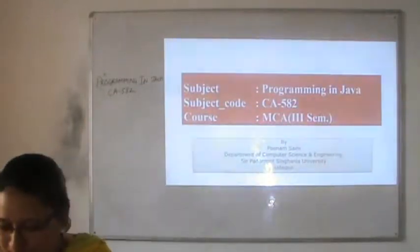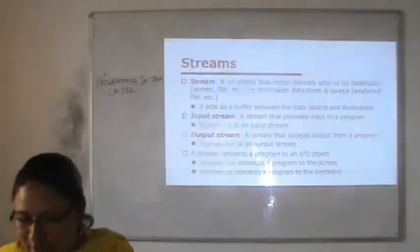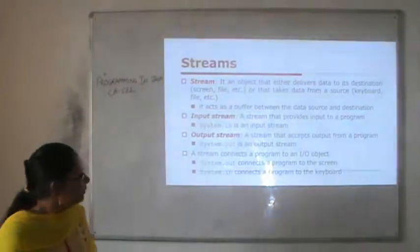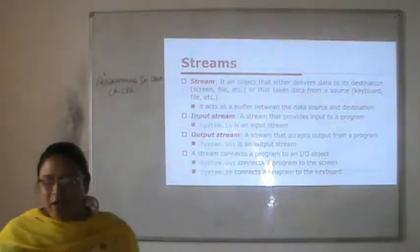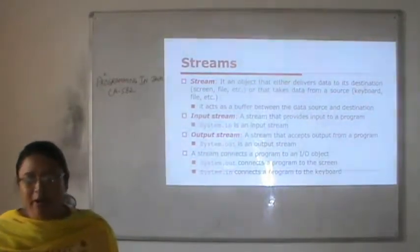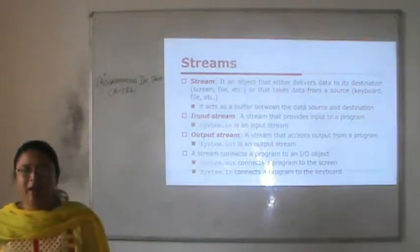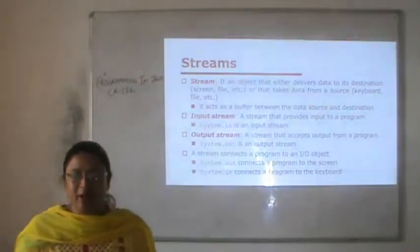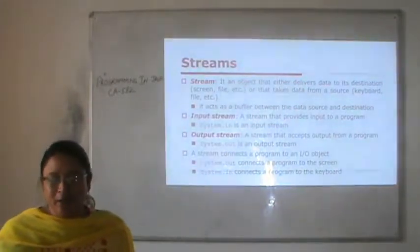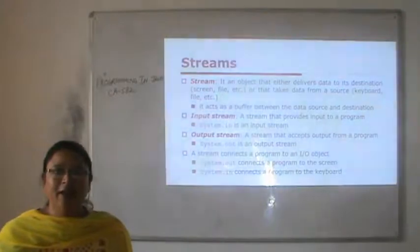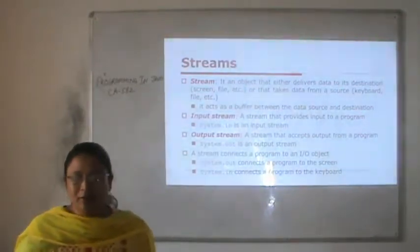Today we will discuss input-output streams in Java. First, what are streams? A stream is an object that either delivers data to its destination or takes data from a source. The destination can be a screen or a file, and the source can be a keyboard or a file. It can take data from a keyboard or a file and send the data to the monitor or the file.